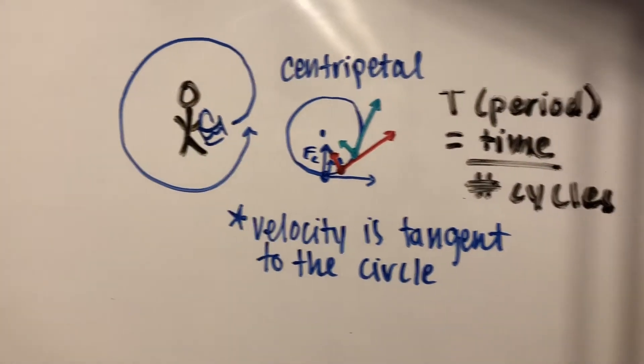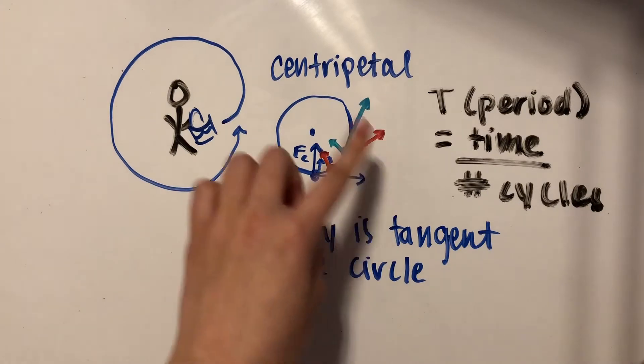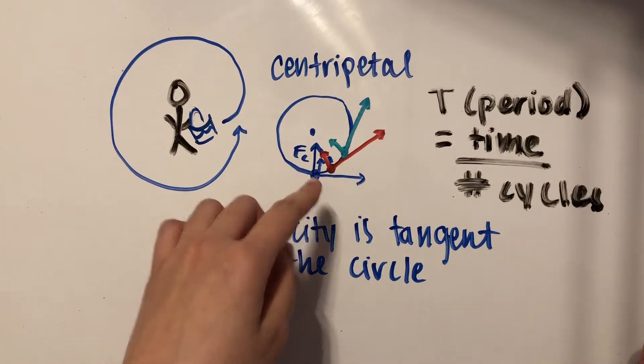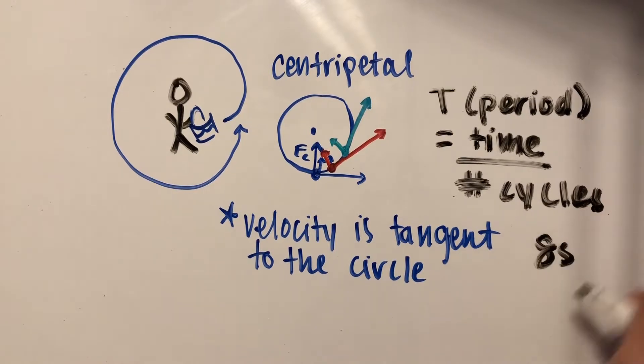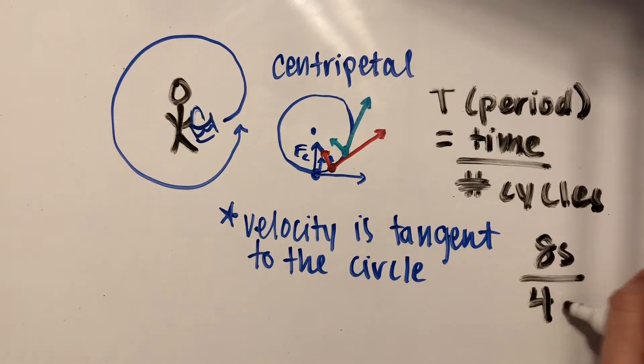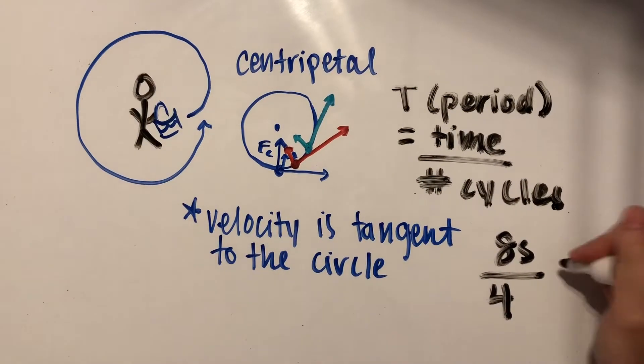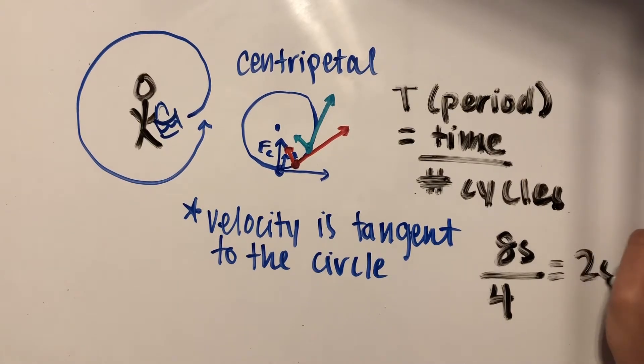If you have a problem that says the pail of water travels four cycles in eight seconds, then you can say that in eight seconds it makes four cycles in total. That's going to be two seconds per cycle.